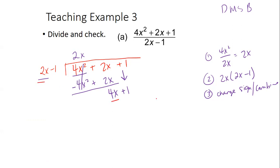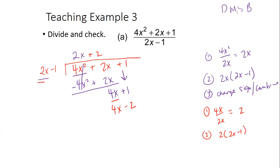Then we repeat. We have four X divided by two X, so I'm asking myself: what's four X divided by two X? Two. So this is going to be plus two. After we divide, we multiply: two times two X minus one gives four X minus two. After that, we subtract — change signs and combine — and I'm left with three. This doesn't have a variable, so this is my remainder: plus three over two X minus one.